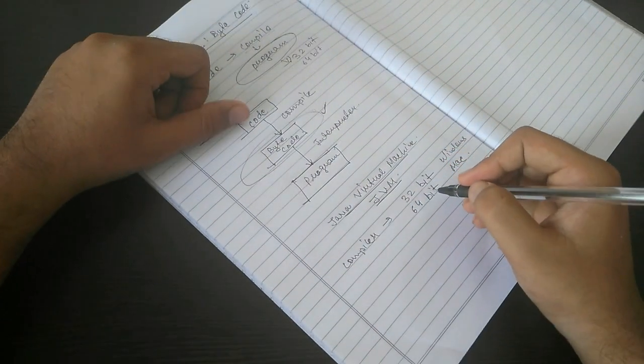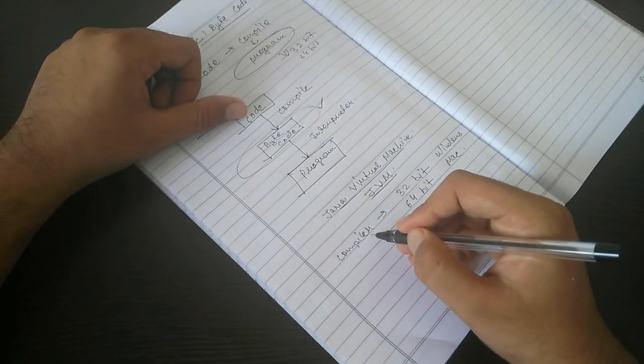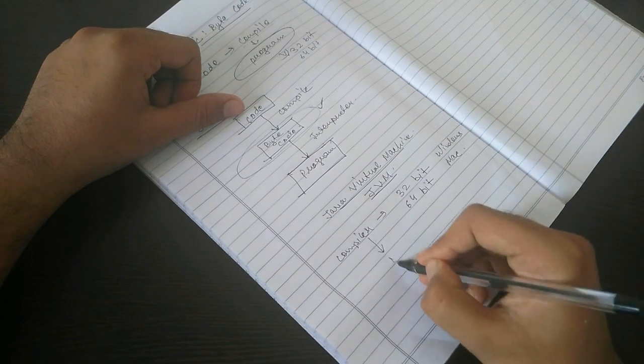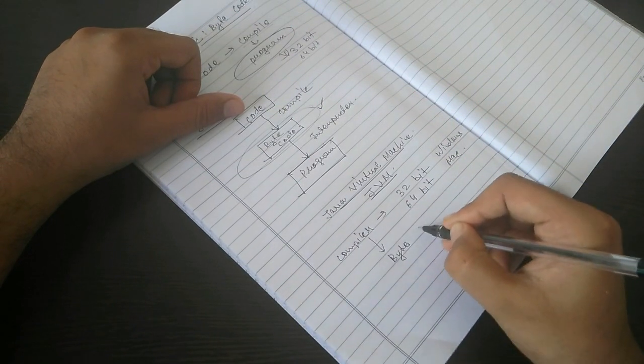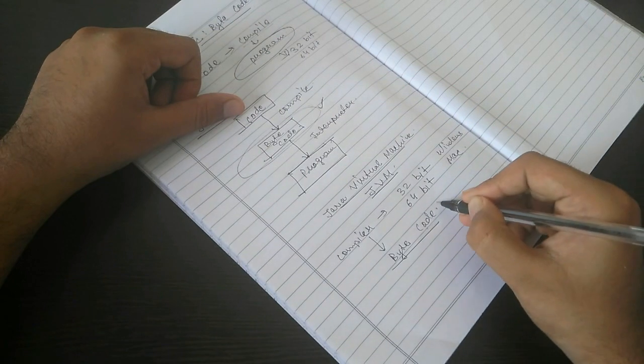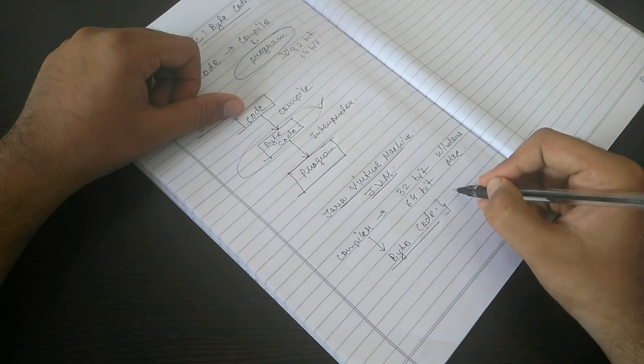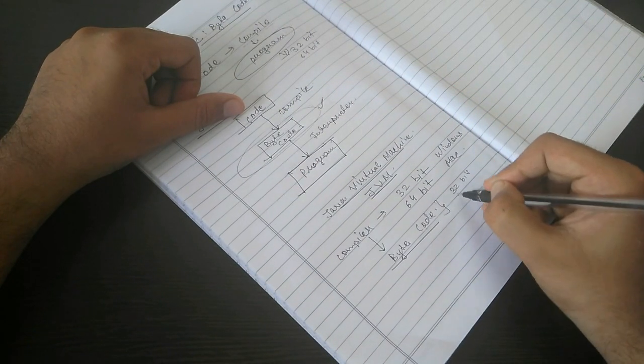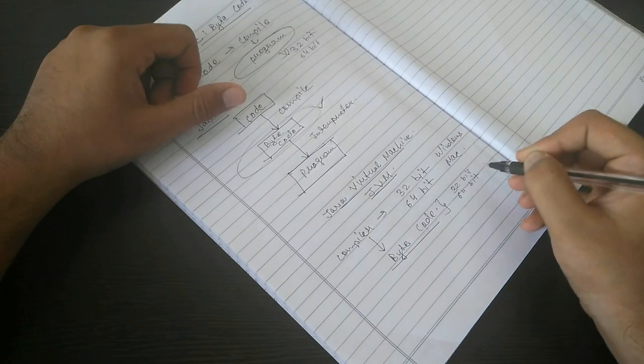But in Java, when you compile the Java code, it gives you bytecode. And this bytecode is compatible with all types of systems, whether it is 32-bit, 64-bit, or any other.